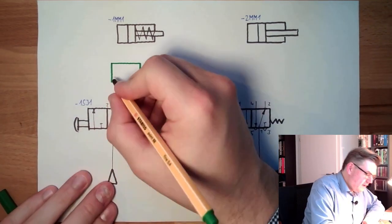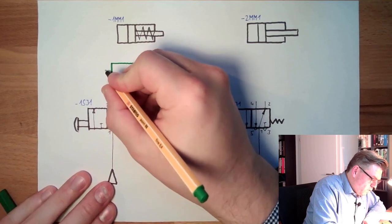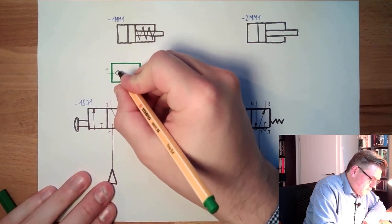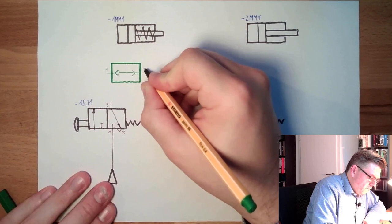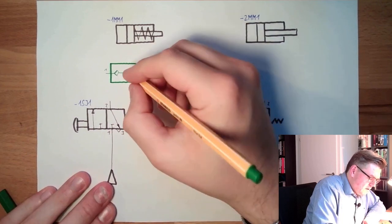The symbol of the quick exhaust valve looking like this. Inside, if we have here the one connector, it looks like that. Here would be three. It is exhaust.